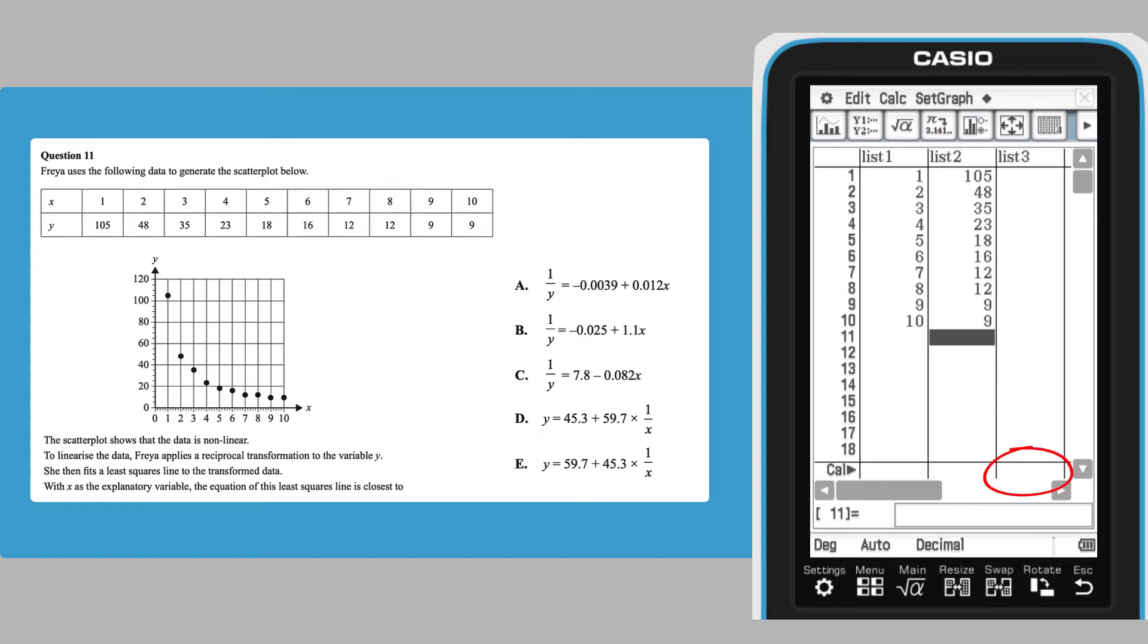tap in the calculation row below list 3, enter the calculation 1 divided by list 2. To enter list 2 as part of this calculation, you can call up the name via the ClassPad's catalogue, but it is probably quicker to type in its name using the ABC keyboard.